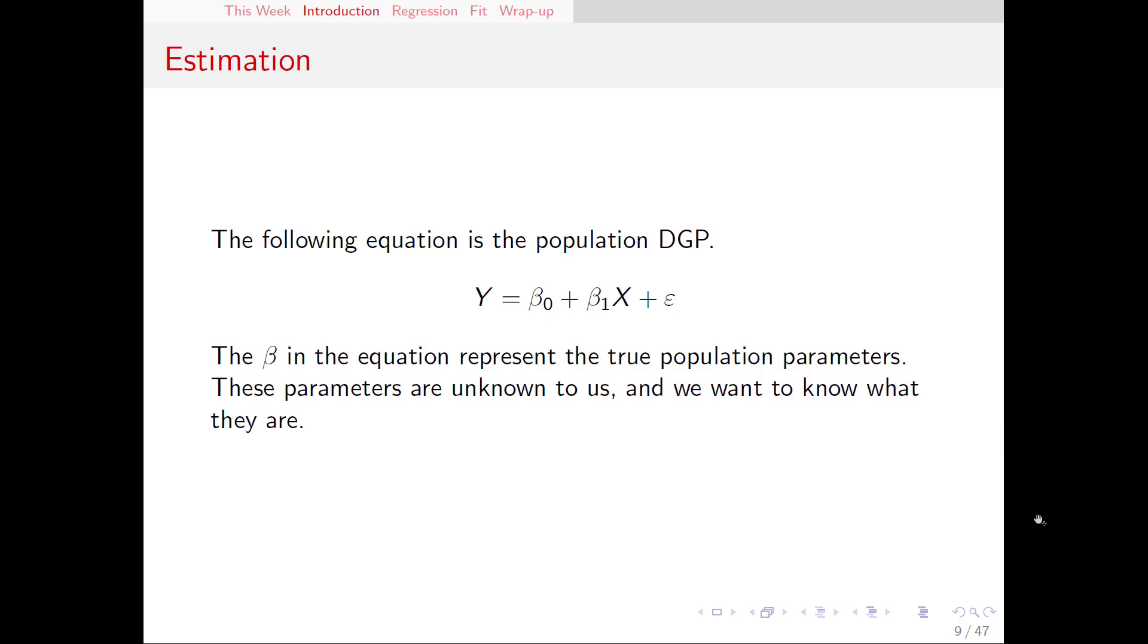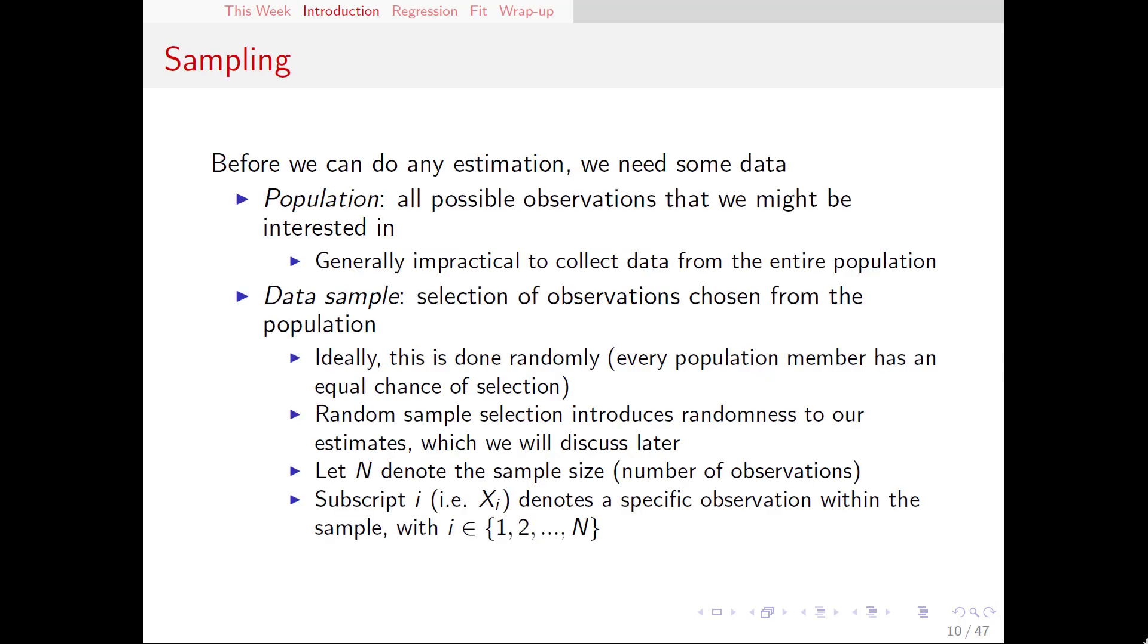The problem that we run into is that we don't actually know what β₀ and β₁ are. If we did know that, then we wouldn't have to be messing around with the regression at all. That true relationship between variables is out there somewhere. We want to know what they are. Now the idea with the regression is that we are going to try to make our best guess as to what that relationship in the population is. But we don't actually see the entire population.